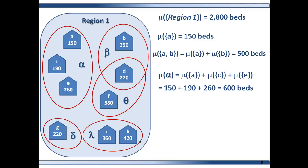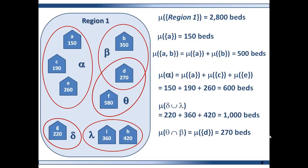For the measure on the union of sets Delta and Lambda, it is important to note that these two sets are disjoint — there is no overlap between them. The union includes hospitals G, I, and H, and equals 1000. The measure on the intersection of sets Theta and Beta, which is just Hospital D, equals 270. The measure on the empty set, which includes no hospitals, equals zero. Remember, every set contains the empty set.